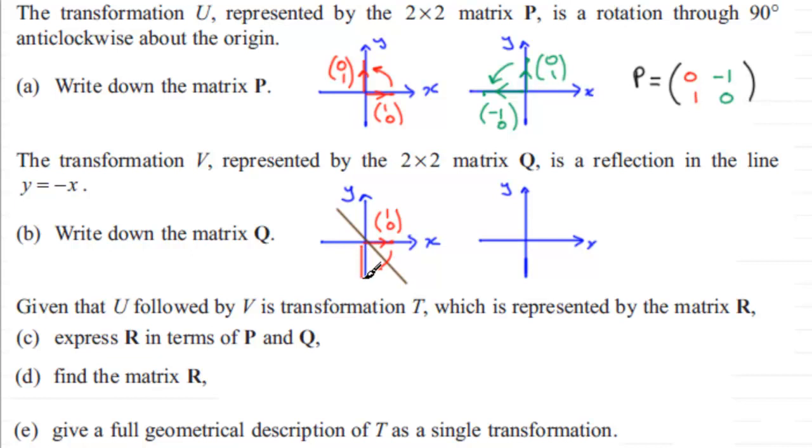Again we now look at the other unit base vector, this one up here (0,1), and if we draw in that diagonal y equals -x, then this vector is going to get reflected over here into this position, and that is the vector (-1,0). So that's telling us that therefore Q is going to be the matrix (0,-1) and then (-1,0).